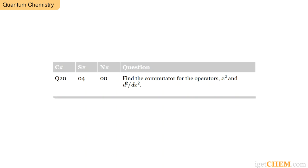The question is: find the commutator for the operators x squared and d squared dx squared. It looks like a fairly short problem, but before we talk about the solution, let's figure out what a commutator means.